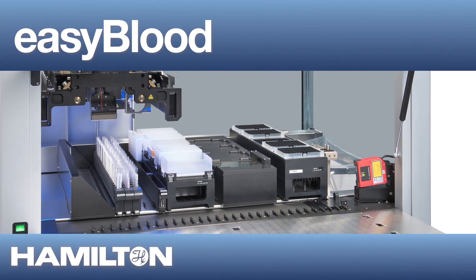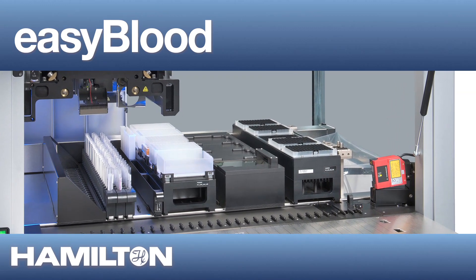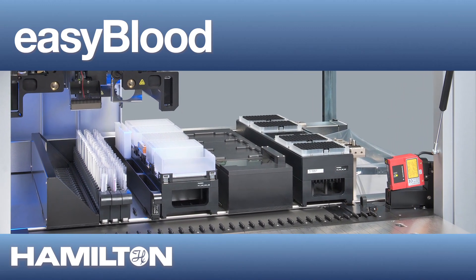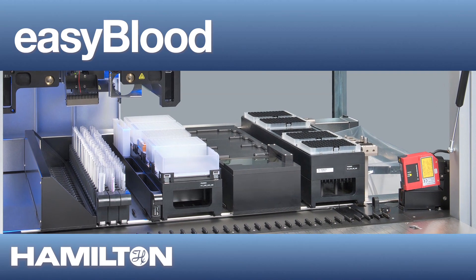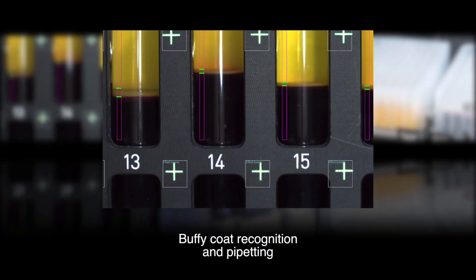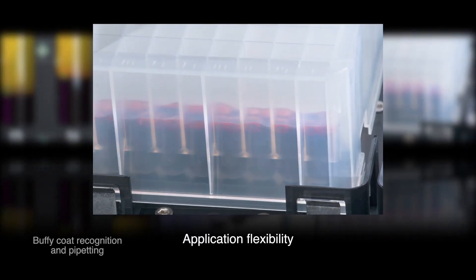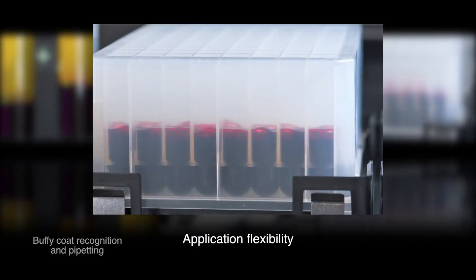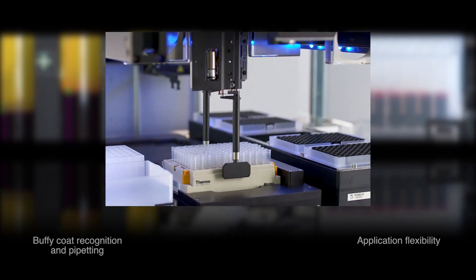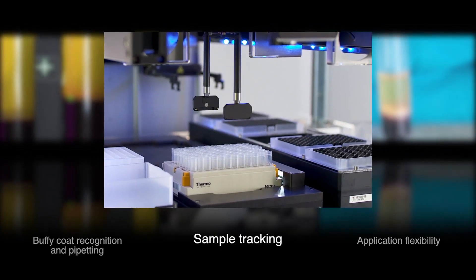offers you the possibility to fractionate blood samples from a multitude of primary sample tubes to storage-ready or processing target labware. EasyBlood automates error-prone manual pipetting and aliquoting steps by automatically identifying the separation layer of blood samples and then reliably pipetting the desired layer.